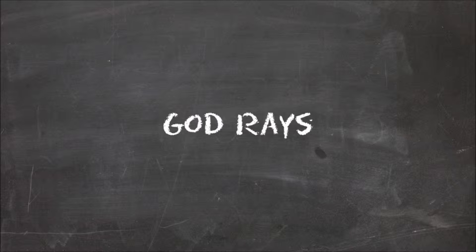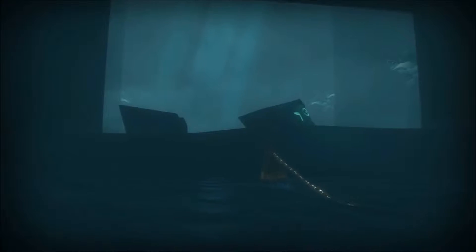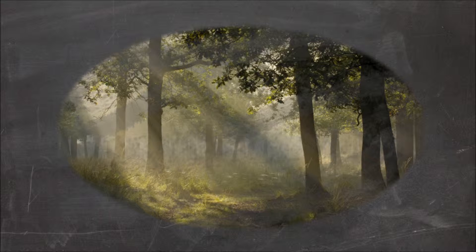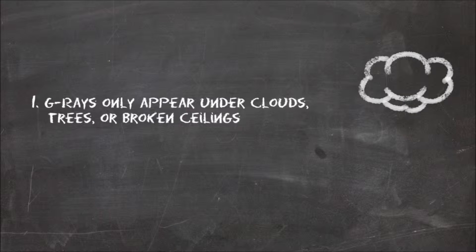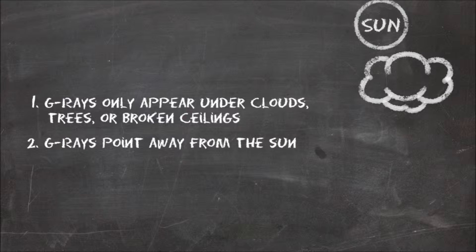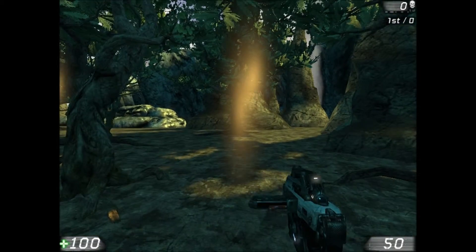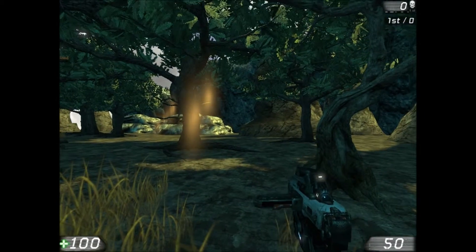Let me pause and talk about god rays. They're frequently used in video games, but just as frequently used incorrectly. God rays are a natural phenomenon caused by light poking through gaps in clouds or trees. There are two rules you should follow when adding god rays to your maps. First rule: god rays can only be placed under cloud cover, trees, or holes in ceiling-like objects. Second, god rays always point in the same direction, away from the sun. Looking back in the editor, I can look at my directional light and pose my god rays in the same direction.